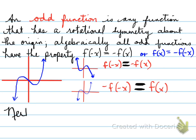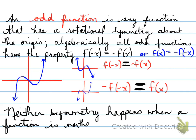What happens if it fails the odd test? It is neither. Neither symmetry happens when a function is neither even nor odd. So reflecting horizontally doesn't match, and reflecting vertically doesn't match either, so we describe it as neither — it is neither even nor odd in terms of its symmetry.